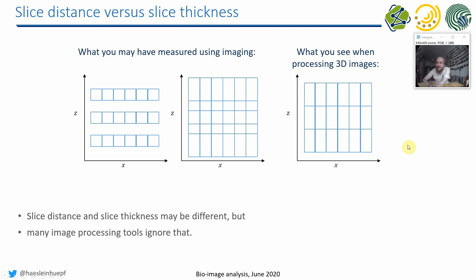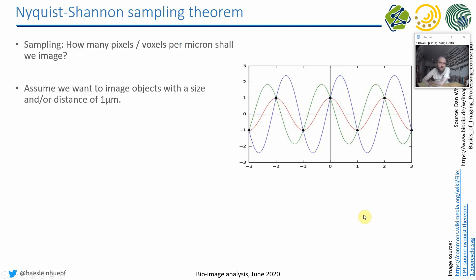This becomes especially important when you think about objects which are smaller than the slice distance. For example, a nucleus sitting between slices was not imaged at all and therefore doesn't appear in the image. Alternatively, a nucleus sitting between two slices may be imaged twice, appearing larger than it actually is. This is just to raise awareness for the difference between slice distance and slice thickness.